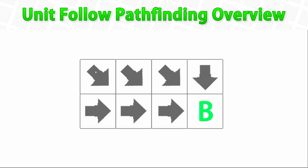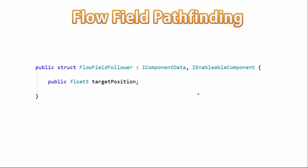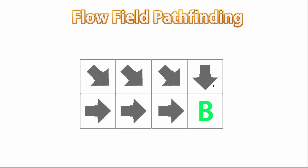In this lecture we're going to see an overview of how we're going to structure the logic for our units to be able to follow the flow-field path. So we have our flow-field pathfinding algorithm fully working — we can get a destination and it calculates all the vectors for all the grid positions, and if we follow those vectors eventually we reach the target. Now let's see how we're going to organize our components and systems to make this work for our units. The first thing we're going to do is create a FlowFieldFollower component — this is an IComponent and it's going to store a simple target position in world space, basically where the unit wants to go. This component is also going to be enableable. When it is enabled, the unit mover system will follow the vector of the underlying grid node until it reaches the target position.